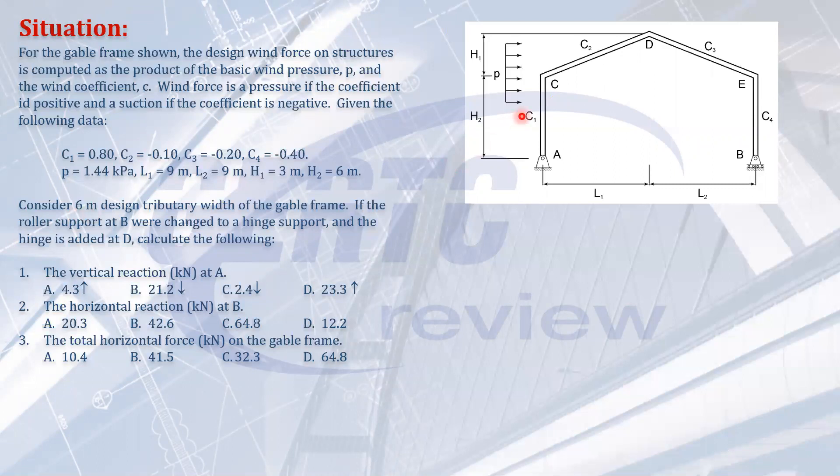L1 is 9 meters, L2 is 9 meters, H1 is 3 meters, and H2 is 6 meters. We will consider 6 meters tributary width of the gable frame perpendicular to the drawing. That's our tributary width.